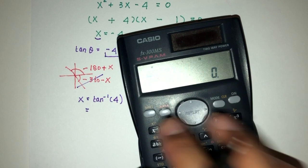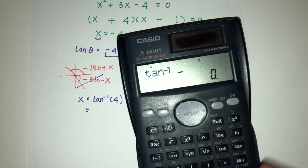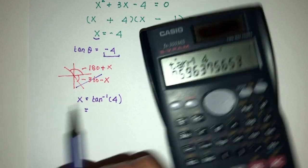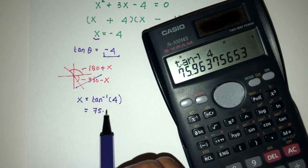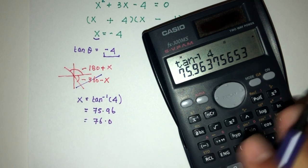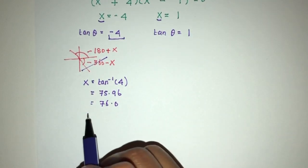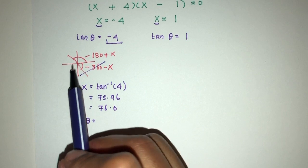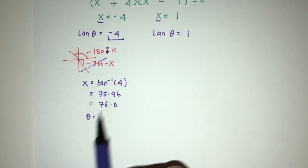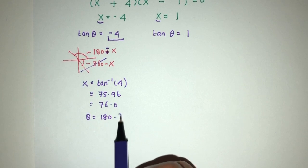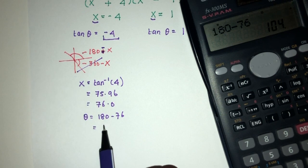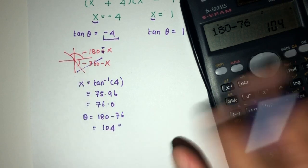Tan inverse of 4, using degrees, should be 75.96, which is 76.0. Now to find θ, we have to look at the quadrant. Here we have 180 minus x, that will be 180 minus 76. That will be 104 as your answer for this one.